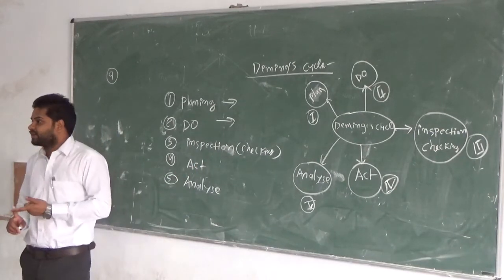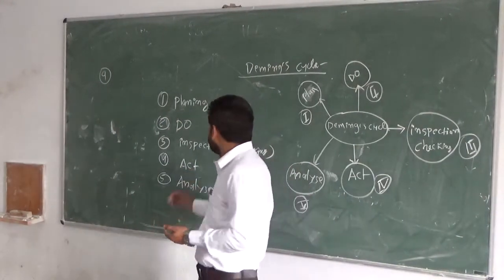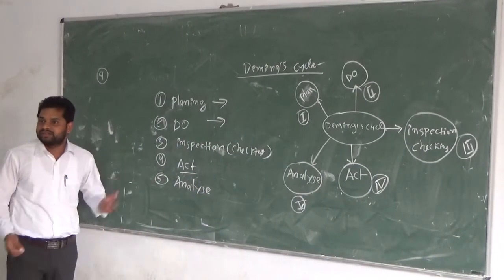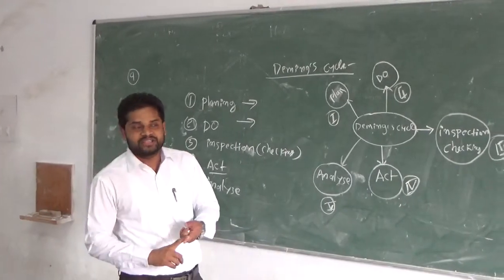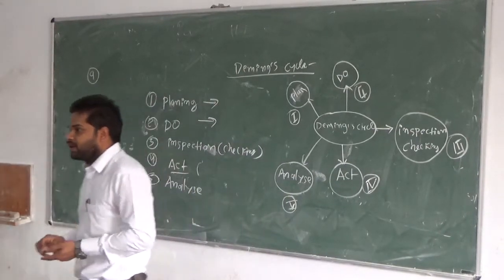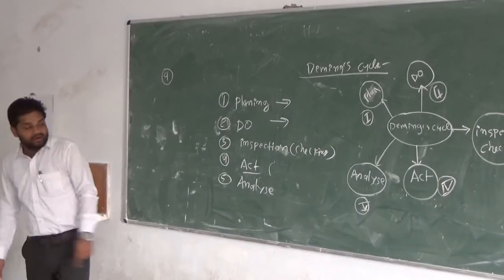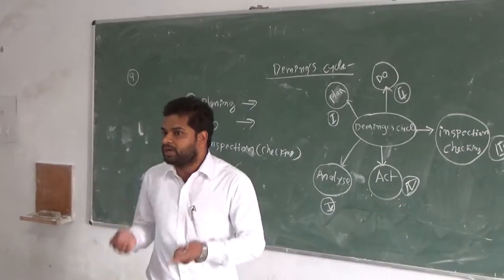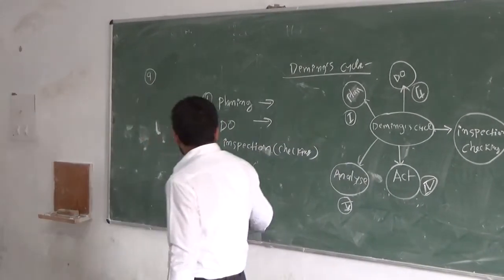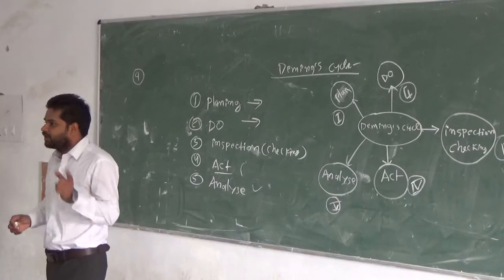The third one is Inspection. Inspection is important because after inspection, we can say this is a quality product. The fourth one is the Act. Act is what? This is the marketing or advertisement. Because any product wants marketing. Without marketing, we cannot achieve more customers. Every company or organization wants more customers for getting more profit. So how can we achieve more profit? If we have a good advertisement, people know more about our product. And then another one is Analytics — how can we receive the product? This is the finalization of the Deming cycle.